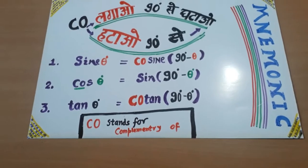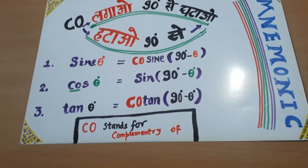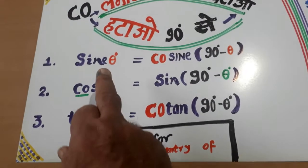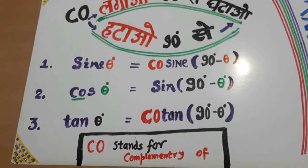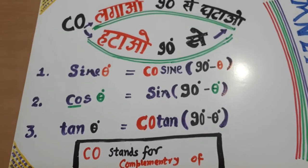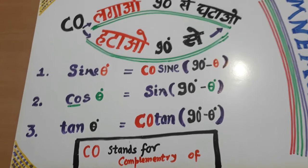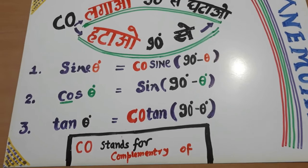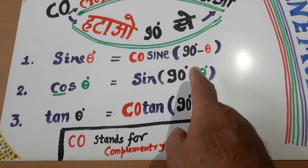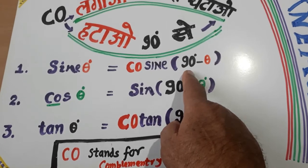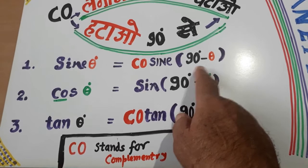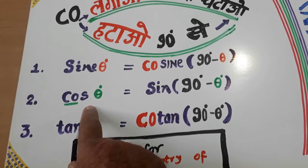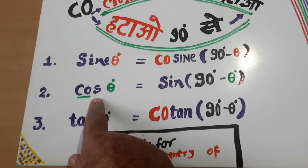Now look here. What does it mean? Supposing you have been given sin theta — write 'ko' before it, it becomes cosine. 90 mein se theta ghata do. Here it is cos(90 - theta), that is cosine theta.